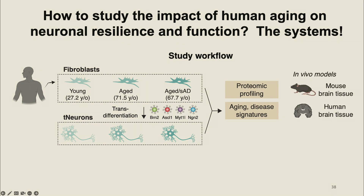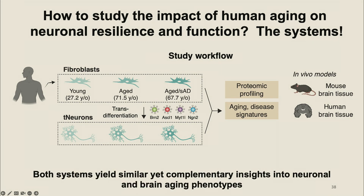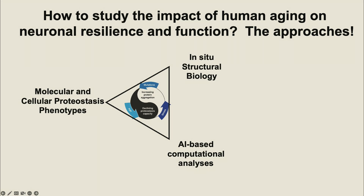The other system we have been using is mouse brain tissue from both young and aged and AD model mice, and for some experiments we've also compared this to human brain tissue. The take-home message from our analysis is that they yield similar but also complementary insights into neuronal and brain aging phenotypes. We eventually hope to develop these systems for testing drugs and interventions. We have a three-pronged approach: molecular and cellular phenotypes, in situ structural biology, and AI computational analysis.